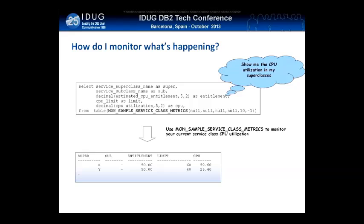If you want to monitor this setup, you can use our MON_SAMPLE_SERVICE_CLASS metrics function, which I've shown you an example of here. We're calling it to list all service classes over a 10-second interval. If you look at the output, you see our two service classes and their corresponding limits. The CPU utilization in our sampling period was about 60% for service class X, meaning it's hit the limit. For service class Y, it's only at about 25%, so it hasn't used up its full allocation. Essentially, you've got your two applications isolated to use their own proportion of CPU on the box.